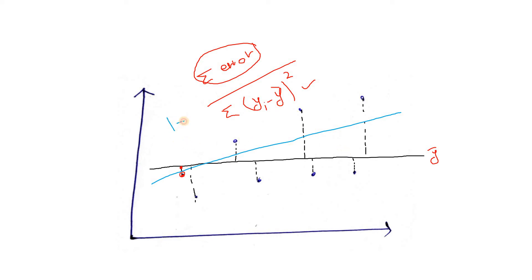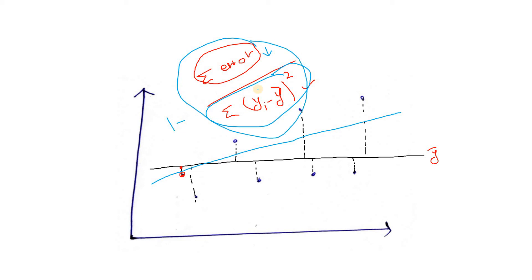When we take 1 minus that term, if our line fits well, the numerator will be very small compared to the denominator — which is essentially constant for a given data set. So the overall ratio decreases, and 1 minus that term increases. The more the value of the coefficient of determination, the better our model is.